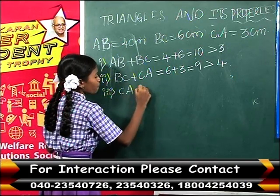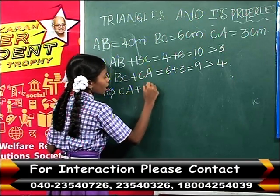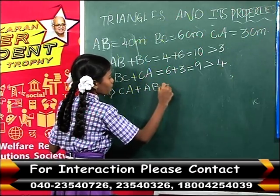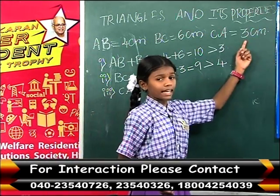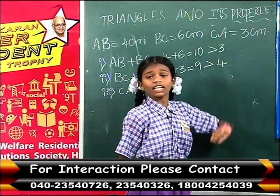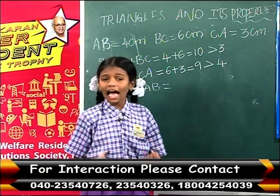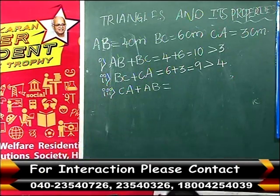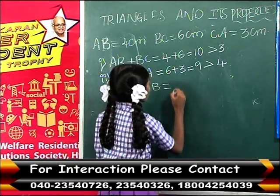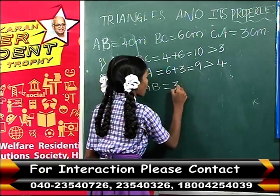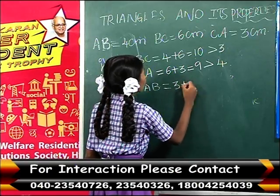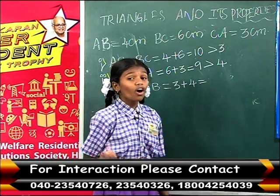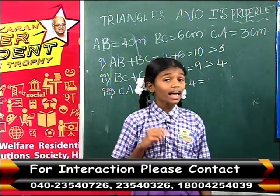And CA + AB = 3 + 4 = 7, which is greater than the third side BC = 6 cm. So the triangle is possible.